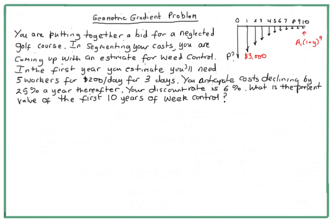Let's do an example of a geometric gradient problem. I wanted to do one with a decreasing growth rate, as that brings up a couple of issues worth talking about. Imagine you're putting together a bid for a neglected golf course, and in segmenting your costs you're coming up with an estimate for weed control. You've got a really noxious weed that has to be pulled up by hand, and you have to figure out what that's going to cost you over a certain period of time.